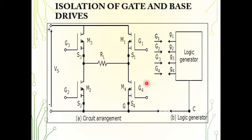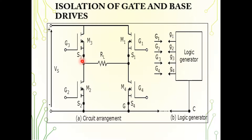For M2, the common ground is connected, so we just need to connect the gate terminal of the logic circuit to the gate terminal of MOSFET M2. However, for M1 and M3, we do not have a common ground connection. For M1, we can connect G1 to G1, but we cannot provide the source reference. Similarly for M3, we can connect G3, but we cannot give the common ground to that point. That is why we need isolation between the power circuit and the logic circuit.